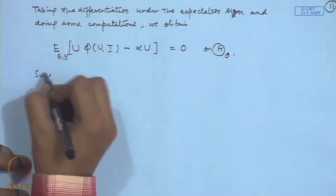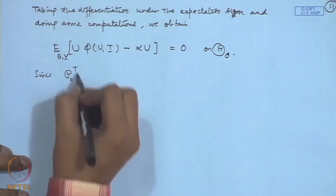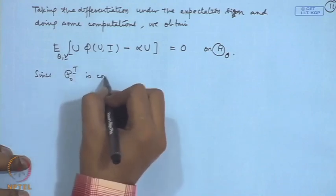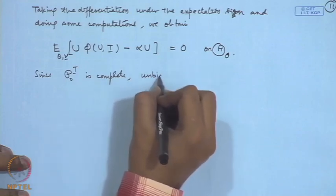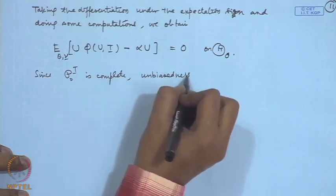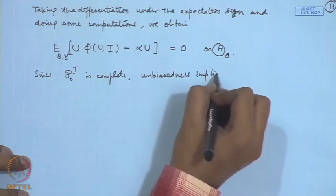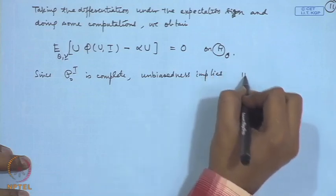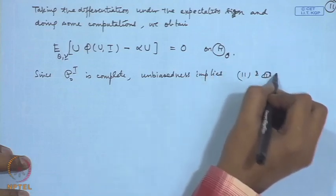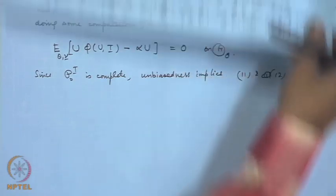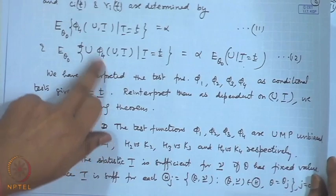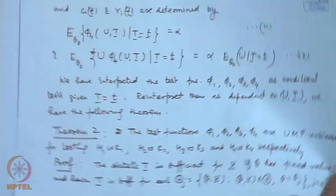Now, since the family under theta naught is complete, we have already seen this thing. Unbiasedness implies the conditions 11 and 12, the conditions 11 and 12 which I stated for phi 4.